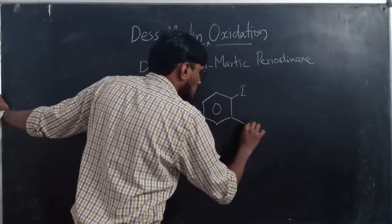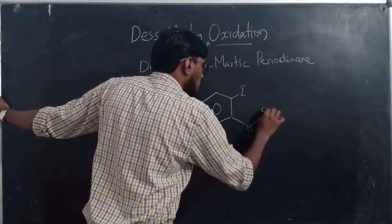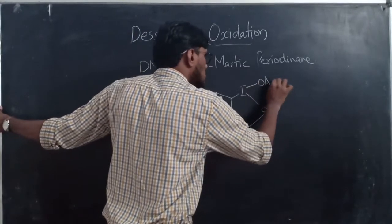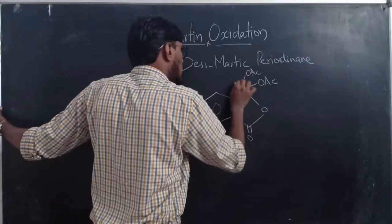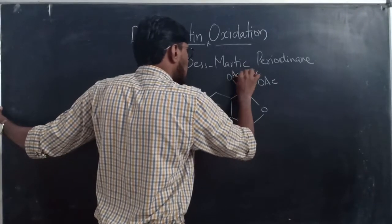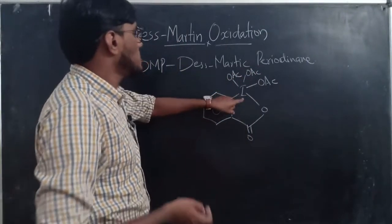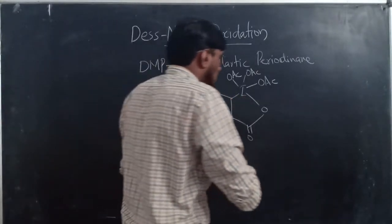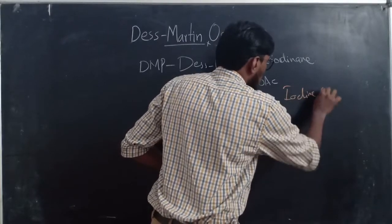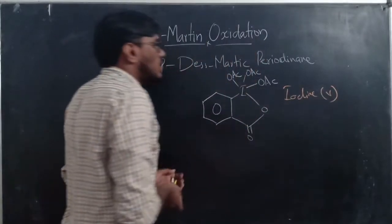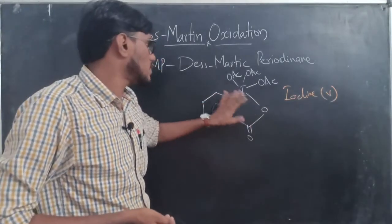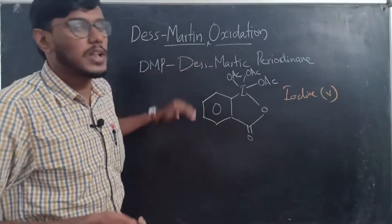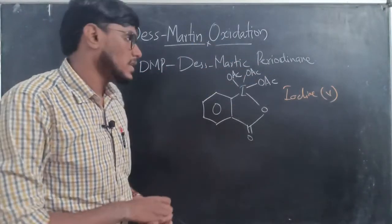The structure of DMP looks like this: there is an iodine atom, a C=O group, an oxygen atom, and this iodine is attached to three acetate groups (OAc, OAc, OAc). This iodine is a hypervalent iodine — the oxidation state of iodine is +5. This hypervalent iodine atom is present in Dess-Martin periodinane.